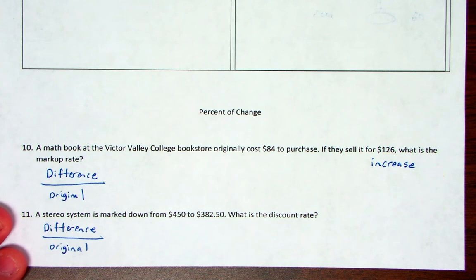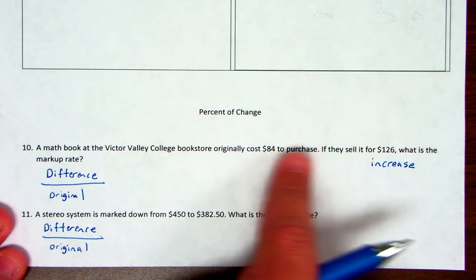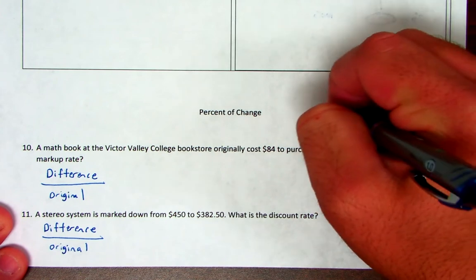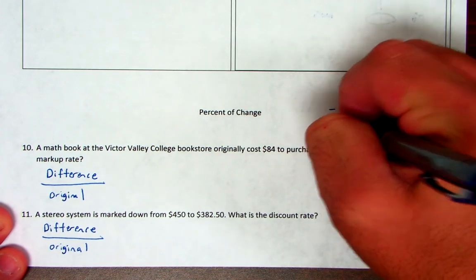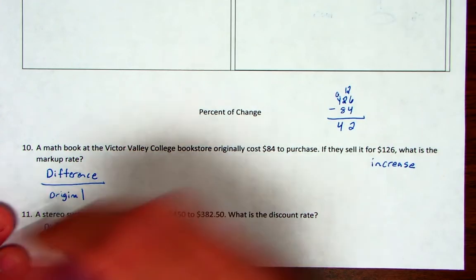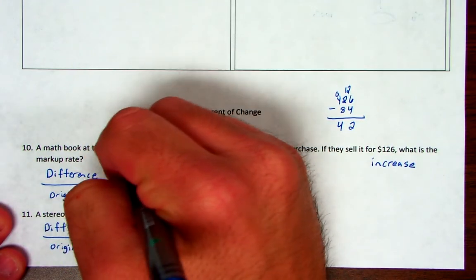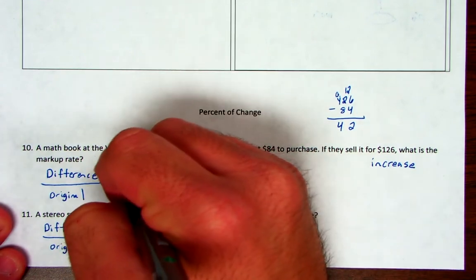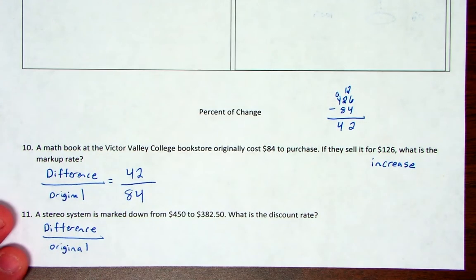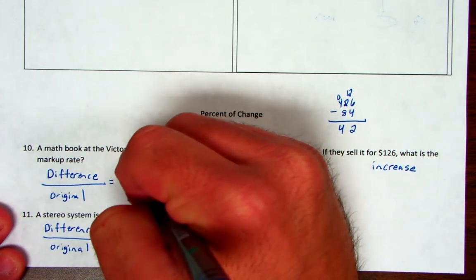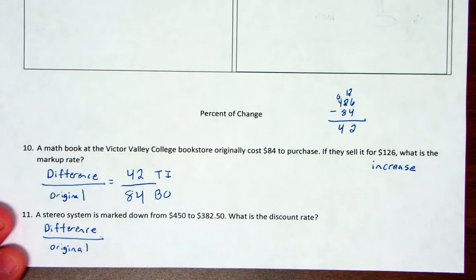Now we're going to have to find the difference. $126 minus $84. The difference is $42. And you have to put that over the original amount, which was $84. Now this should be an easy problem. Notice you have a fraction. Top in, bottom out. You go solve, you get your decimal. Your decimal two places to the right.